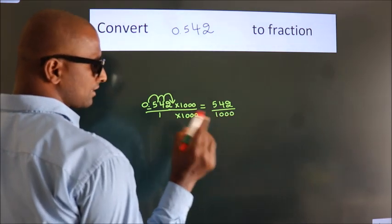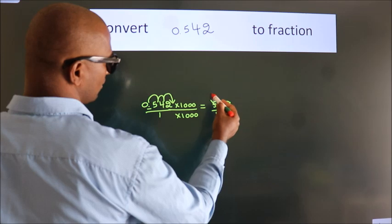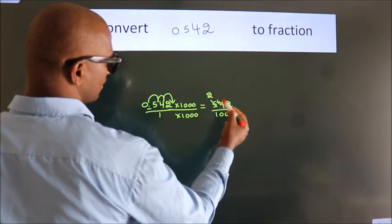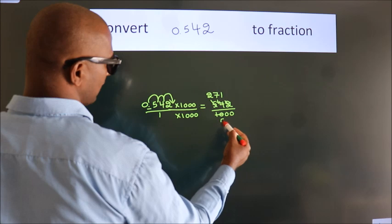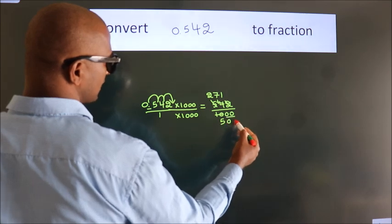Now, I cancel with 2. 2 2s, 2 7s, 2 1s, 2 5s. These zeros as it is down.